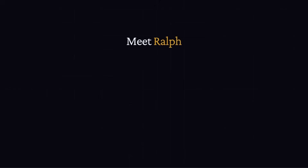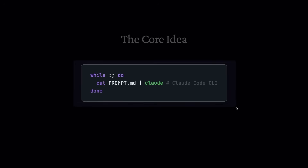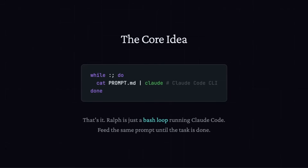There is this guy called Jeffrey Huntley who came up with a very interesting and simple solution. He said: what if we just don't let it stop? What if every time Claude Code finishes and tries to exit, we just feed it the prompt again? He named it Rough Wiggle because Rough the character just keeps going — he doesn't know he's failing. So Jeffrey's whole thing was: what if we leaned into that? This is the whole technique: just a while loop where you're piping prompt.md into Claude Code. That's it.